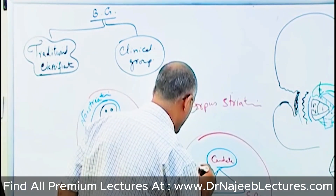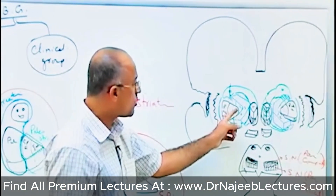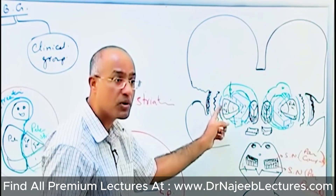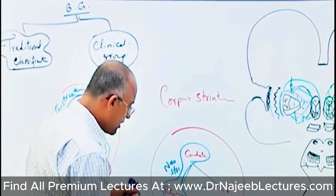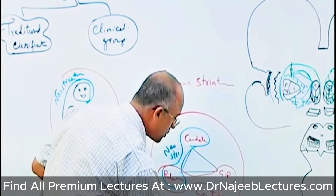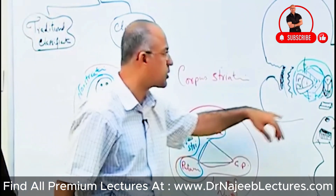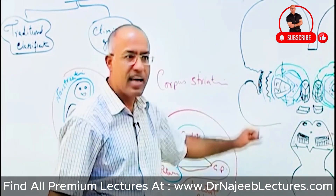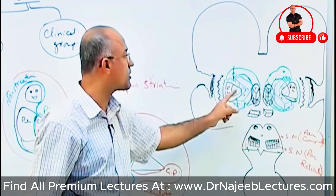So this is our neostriatum. Putamen with globus pallidus together in sections looks like a lens, surrounded by the internal and external capsule, so both together are called lentiform nucleus. The components of lentiform nucleus are putamen with globus pallidus. If I say 'what are the components of lentiform nucleus' — putamen with globus pallidus. If I say 'what is neostriatum' — that is caudate with putamen. And if I say 'what is corpus striatum' — that includes caudate, putamen, and globus pallidus; or corpus striatum is caudate with lentiform nucleus.